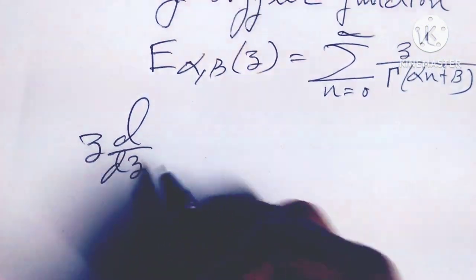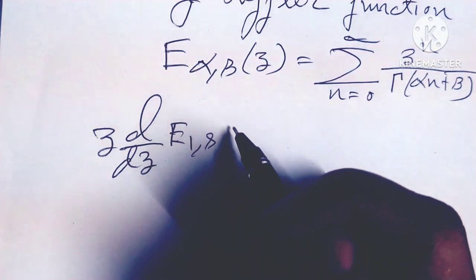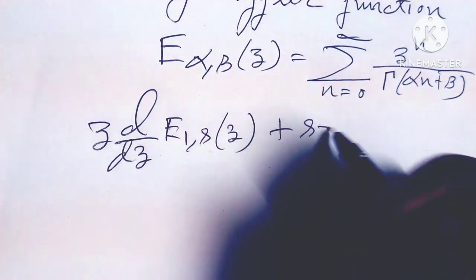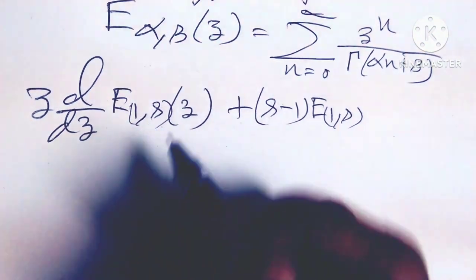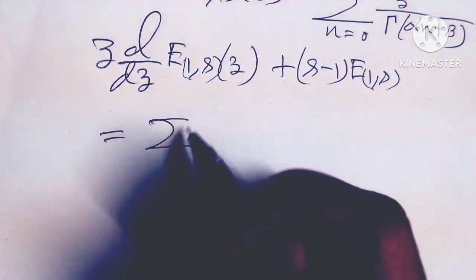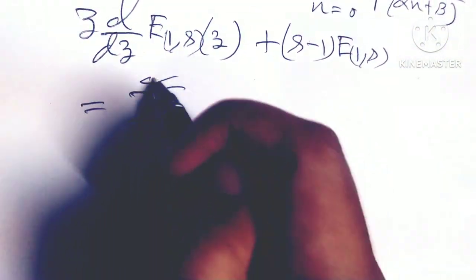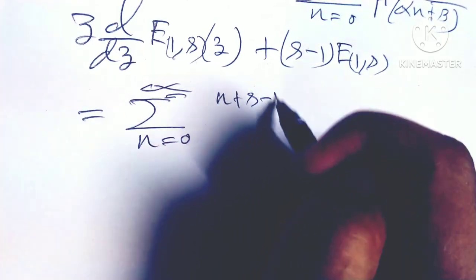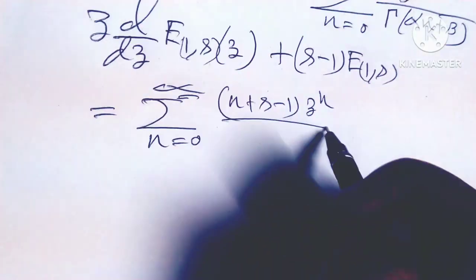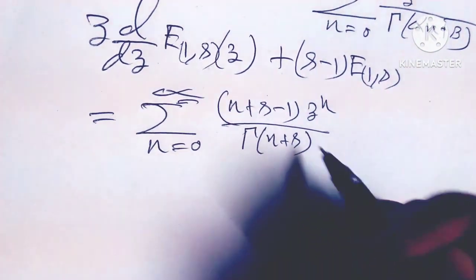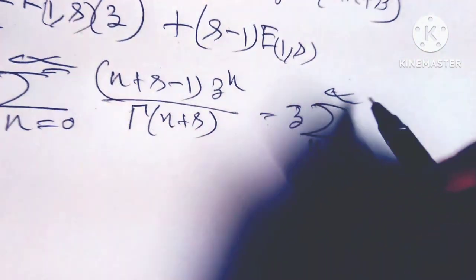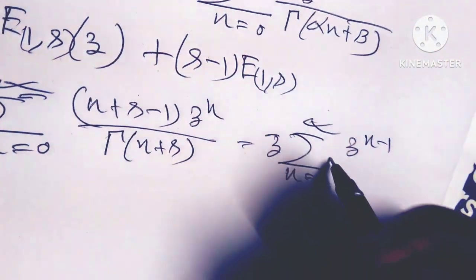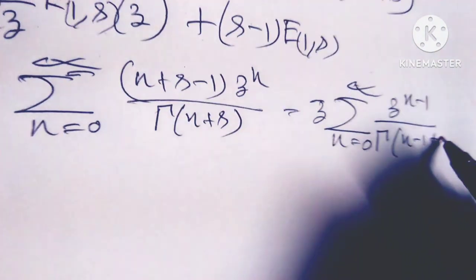Consider z times d/dz of E_{1,s}(z) plus (s minus 1) times E_{1,s}(z). This equals the summation from n equals 0 to infinity of (n plus s minus 1) z to the power n divided by gamma(n plus s), plus z times the summation from n equals 0 to infinity of z to the power (n minus 1) over gamma(n minus 1 plus s).